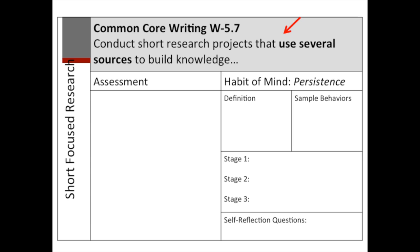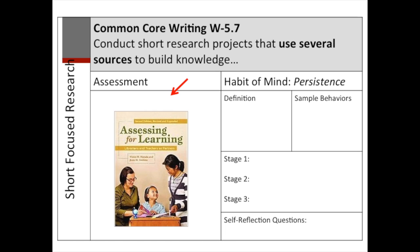Let's move on to the companion page that follows this standard. Each companion page is printed on white paper. Again, the Common Core benchmark appears at the top of the page in the gray box. This page is divided into two columns. Let's start with the assessment column on the left. The assessment strategies and tools listed here are suggestions—just starting points. Most of these ideas are taken from Assessing for Learning: Librarians and Teachers as Partners by Vai Harada and Joan Yoshina. The focus is on formative assessment to guide instruction and student self-assessment. Self-reflection questions appear at the bottom of the page and can be used during or at the end of a research project.